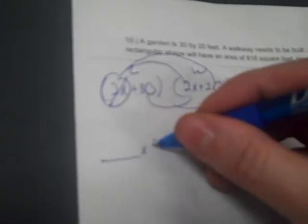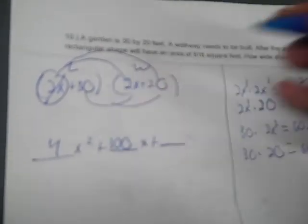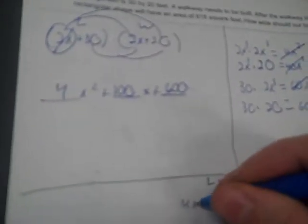Two times two is four. One plus one is two. Two times 20 is 40 — put the x to the one. 30 times two is 60, x to the one. And 30 times 20 is 600. So I arrange my terms and simplify: x second I got four. For x — that's x to the first — 40 plus 60 is 100. And the constants: 600. So I have 4x to the second plus 100x plus 600 equals 816.